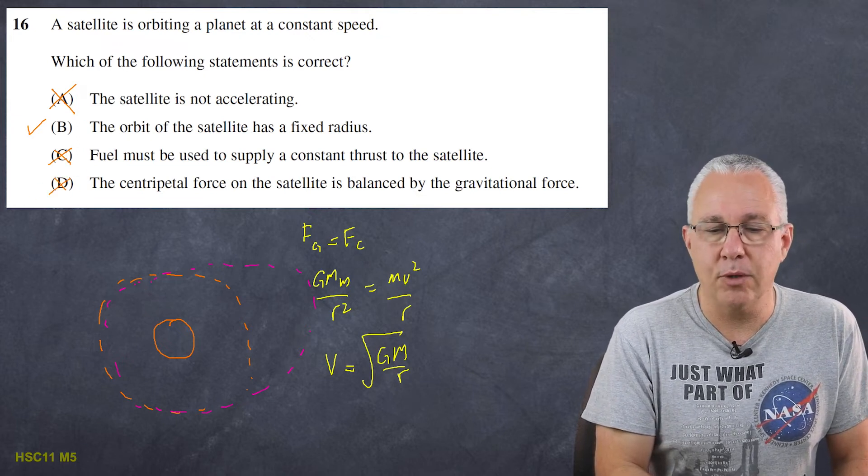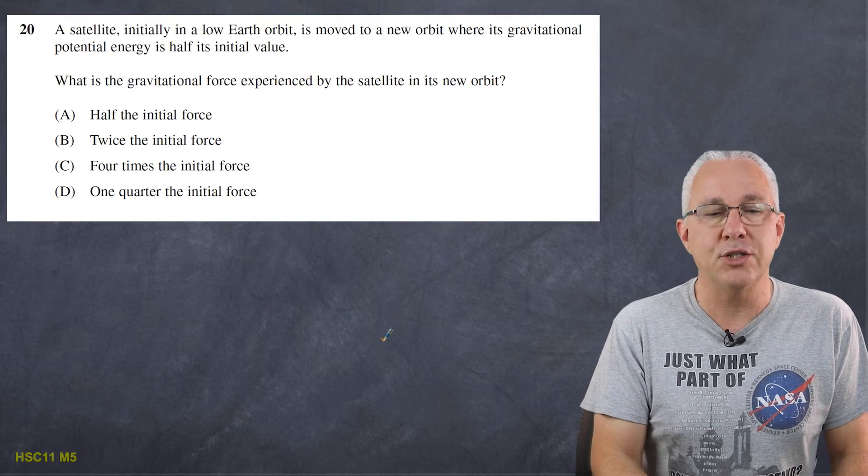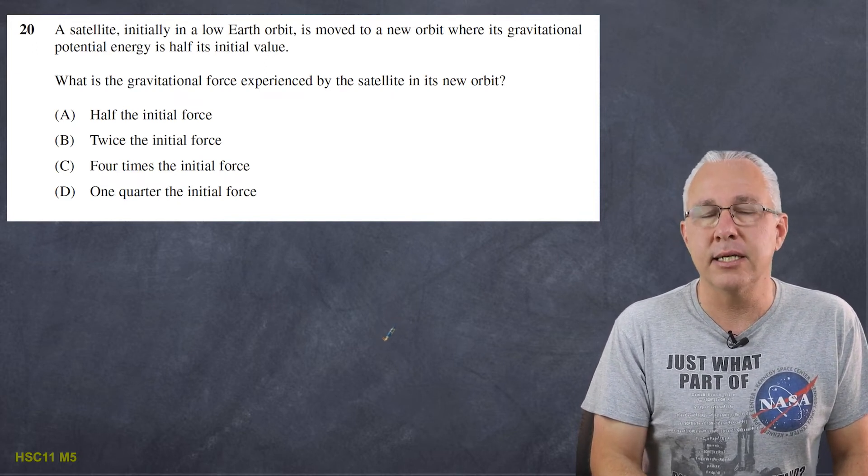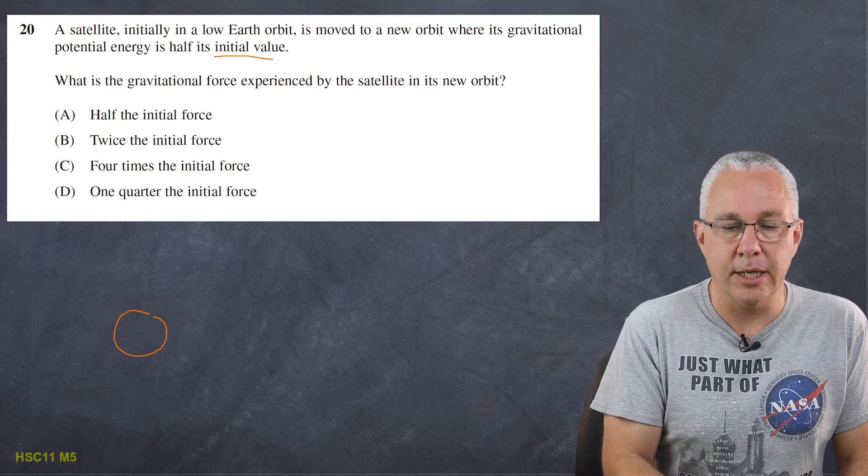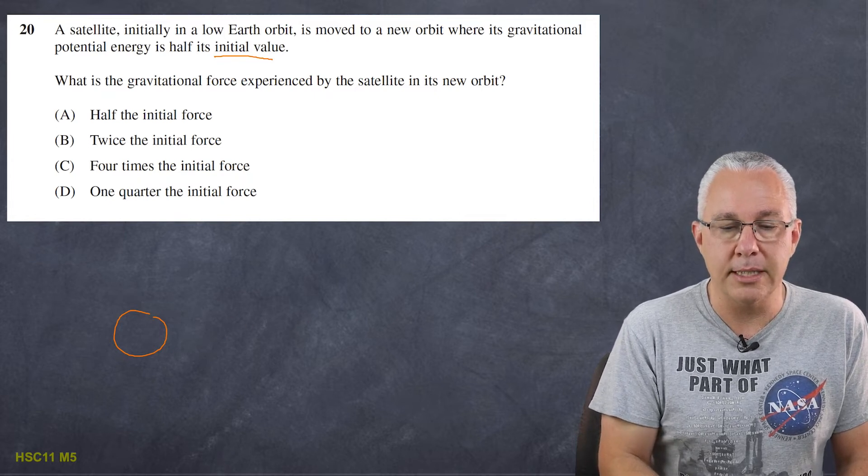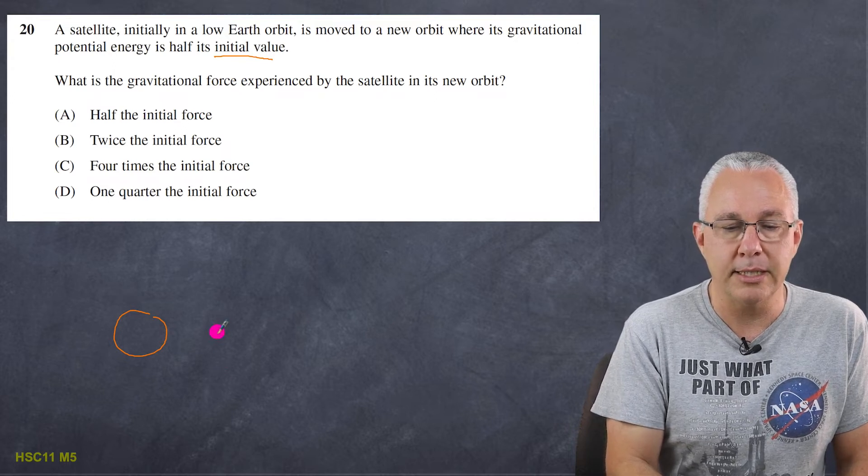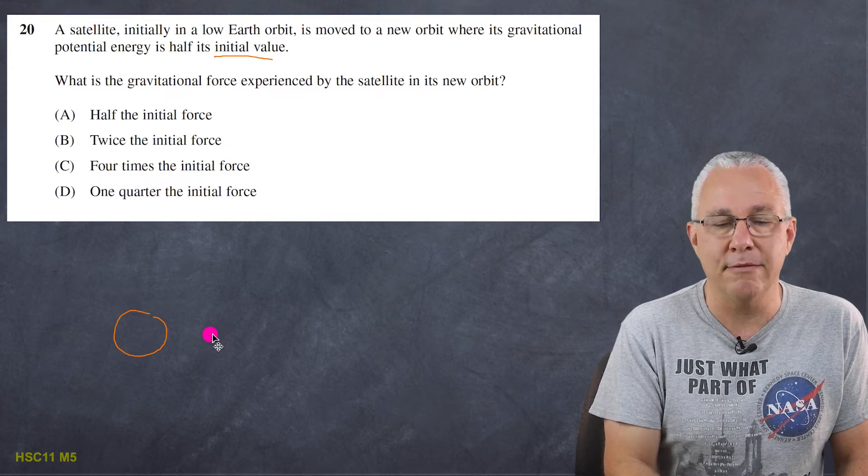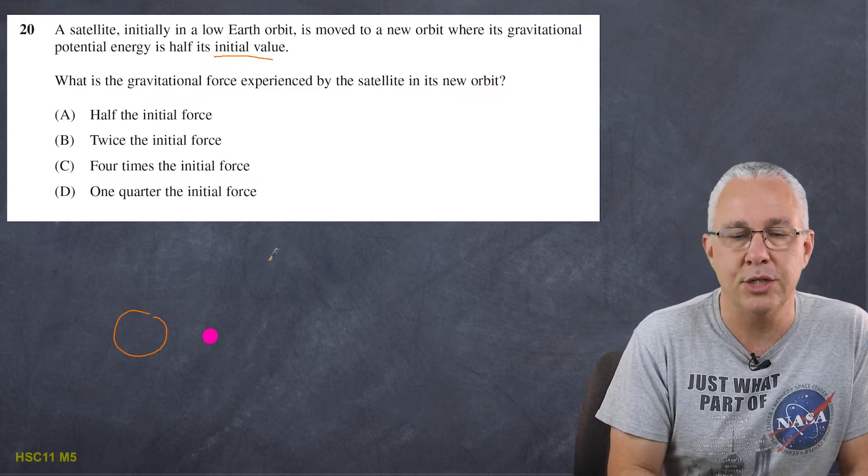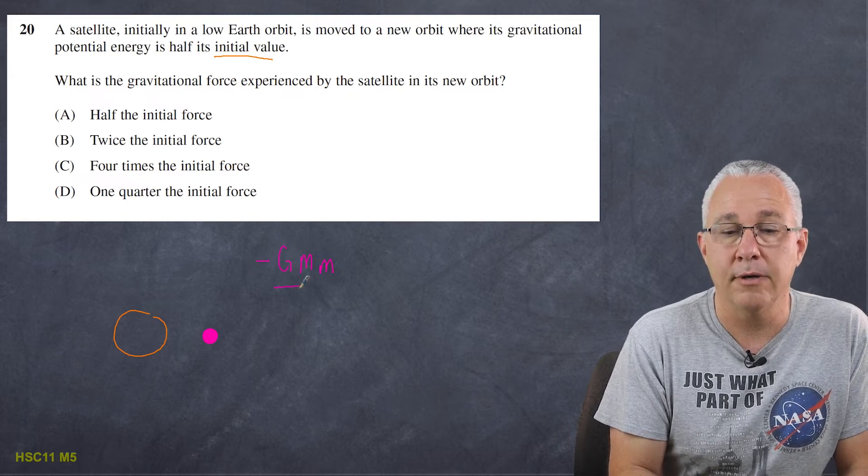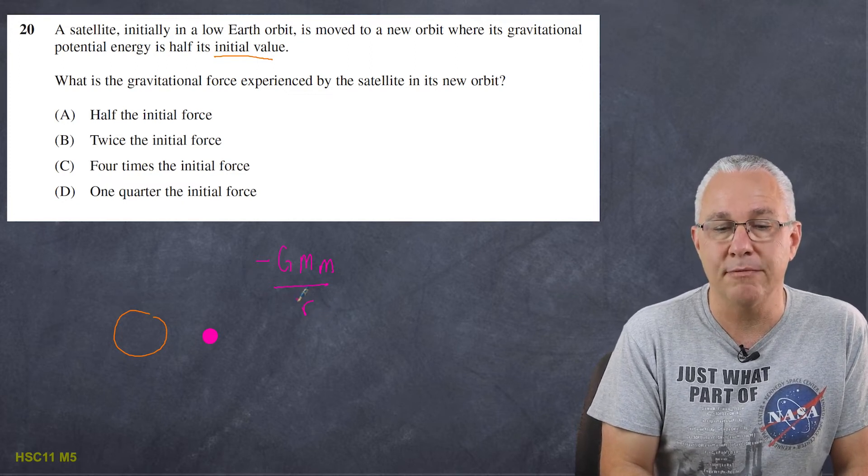All right let's have a look at question number 20. A satellite initially in a low orbit is moved to a new orbit where the gravitational potential energy is half its initial value. So we have our planet earth and we are going to move our satellite from a position, so here's my satellite. So now here's my satellite here and I'm going to move it so it's half the initial value. So what happens? Well the formula for gravitational potential energy is negative GMm over r. So if I divide this value by two in other words it's half what's happened to my radius? Well that means my radius has actually doubled.